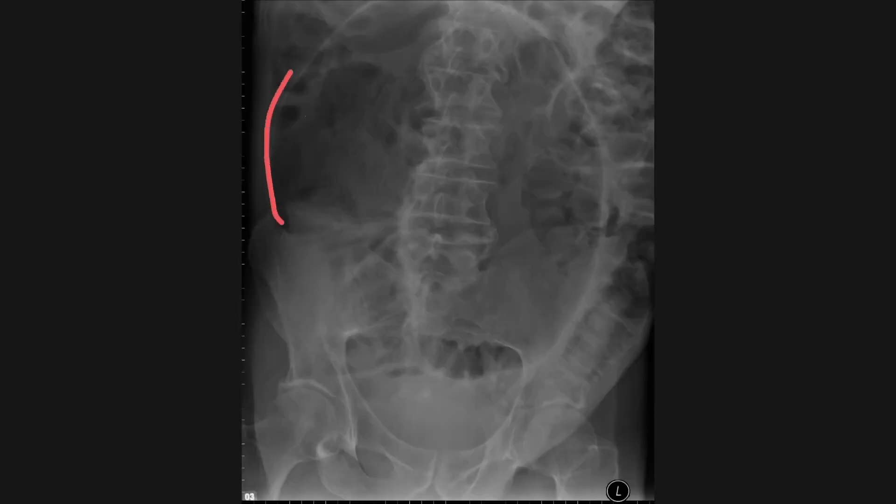So let's take a look at another example. On this frontal x-ray, we have a very dilated gas-filled loop. This has taken the shape of a coffee bean. And actually behind it,